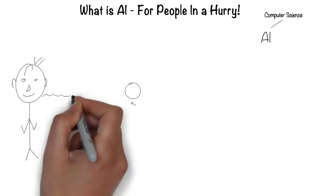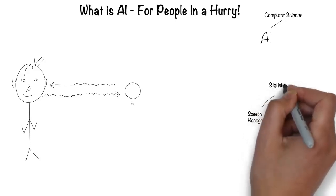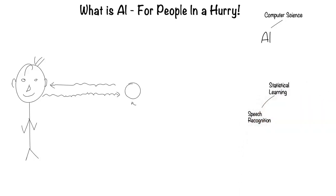Humans can speak and listen to communicate through language. This is the field of speech recognition. Much of speech recognition is statistically based, hence it's called statistical learning.